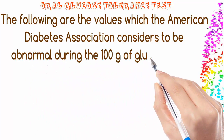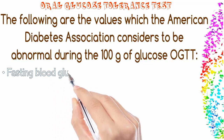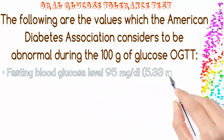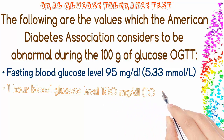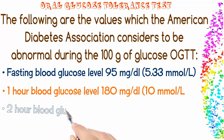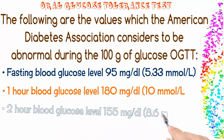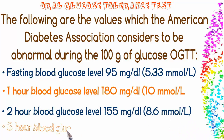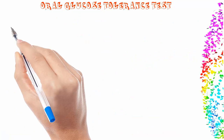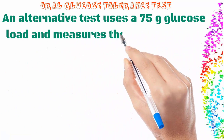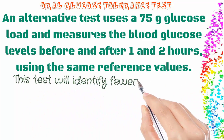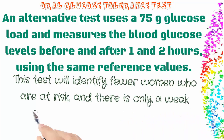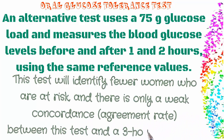The American Diabetes Association considers the following values abnormal during the 100-gram glucose OGTT: fasting blood glucose level greater than or equal to 95 mg/dL (5.33 mmol/L); one-hour blood glucose level greater than or equal to 155 mg/dL (8.6 mmol/L); three-hour blood glucose level greater than or equal to 140 mg/dL (7.8 mmol/L). An alternative test uses a 75-gram glucose load and measures blood glucose levels before and after one and two hours using the same reference values. This test will identify fewer women who are at risk, and there is only a weak concordance agreement rate between this test and the three-hour 100-gram test.